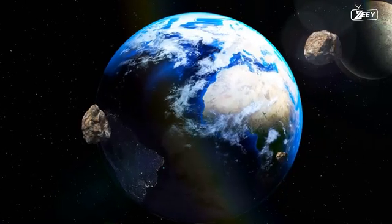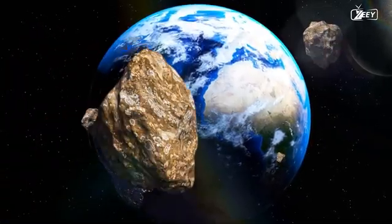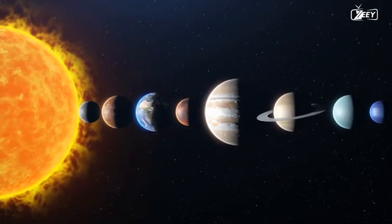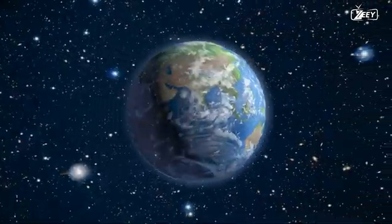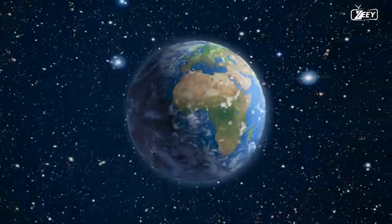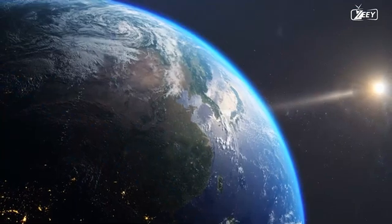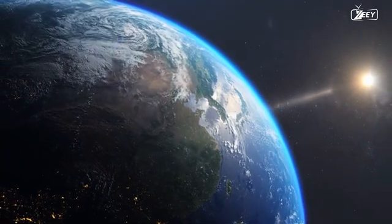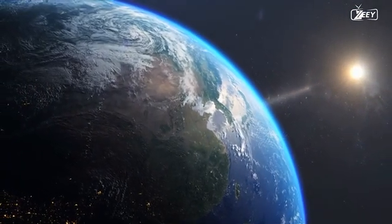However, cosmic events outside our planet threaten these cycles and the order that has existed for millions of years. Is it conceivable for the Earth to break free from its orbit? The Earth's orbit around the sun began with our planet's birth 4.5 billion years ago.